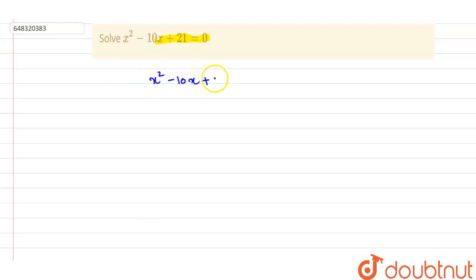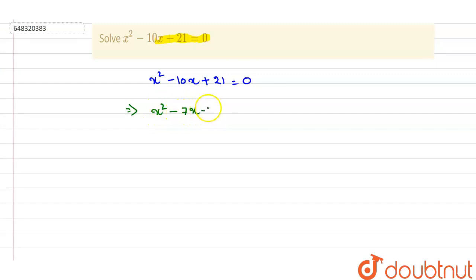x squared minus 10x plus 21 equals 0. We apply middle term factorization. We split minus 10x into two terms whose addition is minus 10x and whose multiplication gives plus 21 — that is, minus 7x and minus 3x.